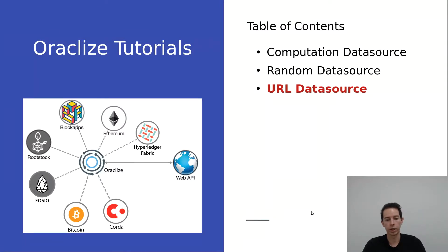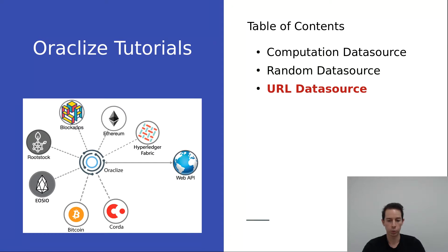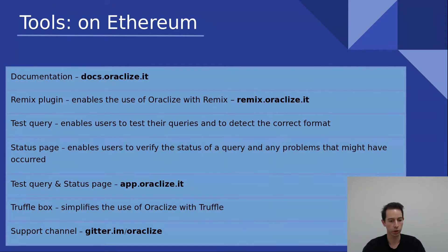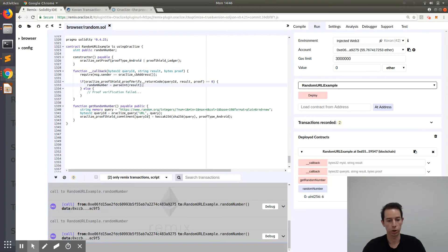As a quick summary: we've seen three different ways to generate a random number. First, the computation data source, which enables delegation of code execution to an external context. Second, the random data source, which enables smart contracts to receive a random number generated in a trusted execution environment, leveraging the Ledger random number generator. Third, the URL data source to fetch a random number via a third-party API — in our case random.org. For more information, visit the documentation at docs.oraclize.it, and use Remix IDE to test smart contracts on official test networks with MetaMask.